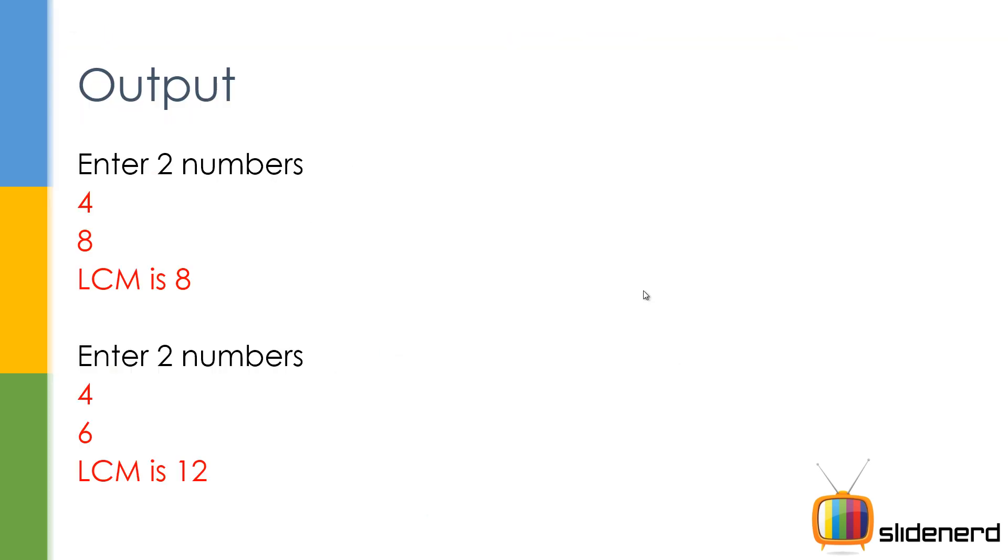Enter the two numbers, 4 and 8. The LCM is 8 in this case. You can check it by working this out on paper or maybe try out LCM calculators which you get on Google. So let me go ahead. There's another number 4 and 6. The LCM is 12. So now we're gonna see what and how this thing is derived.